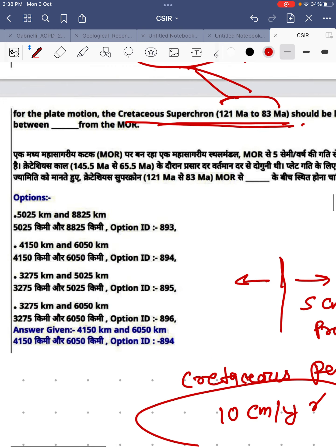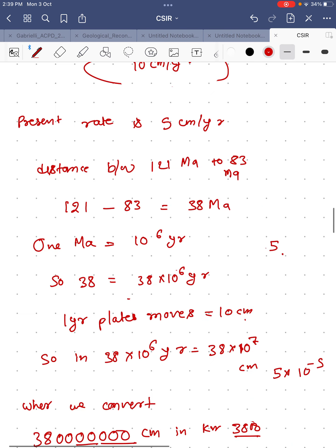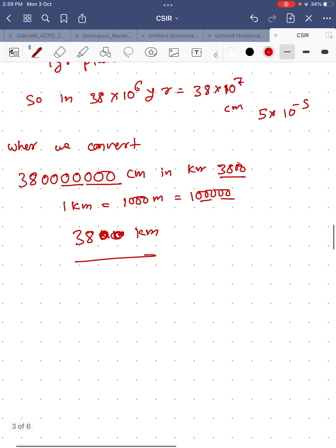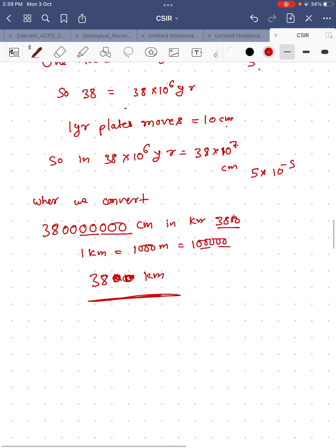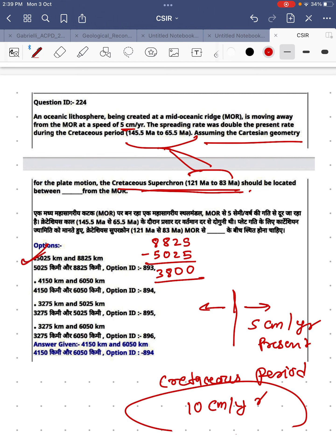Now let's see the options. If you see the very first option, 8,825 minus 5,025, you will get 3,800, which is equal to our given answer of 3,800 kilometers. Are you getting my point? So this is the proper approach and in this way the first option, the official answer, is correct.